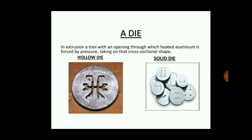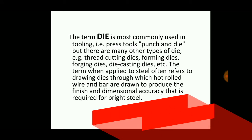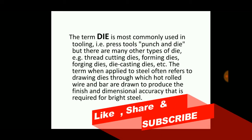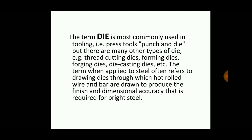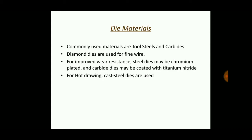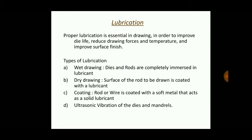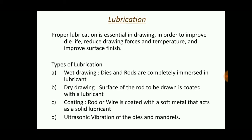Two types of dies are present: hollow die and solid die. These dies act as templates for the billet to take up the shape. Press tools include a punch and die, but there are also thread cutting dies, forming dies, forging dies, and die casting dies. Materials used include tool steels, carbides, and diamond dies for fine wires. Lubrication is essential to reduce friction when the billet is forced through the die, with types including wet drawing, dry drawing, coating, and ultrasonic vibration.